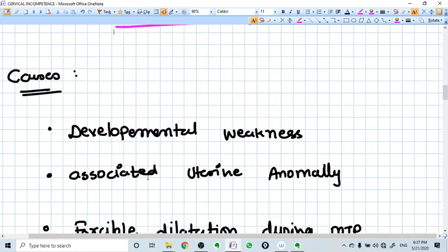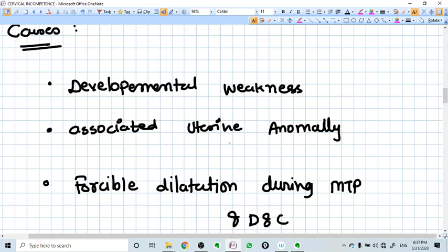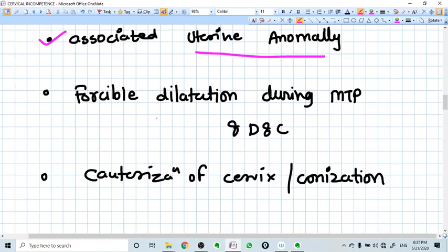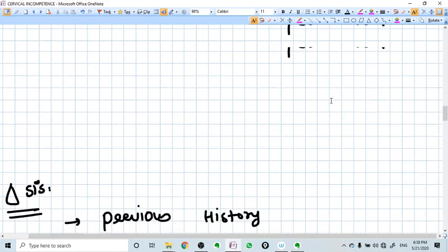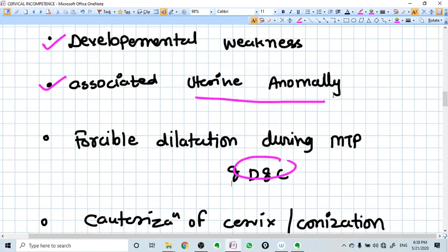There may be developmental weakness of the cervix, or the structure of collagen may not be well formed. Some associated uterine anomalies can be there. Forcible dilatation during D&C, MTP, cauterization, or conization of the cervix leading to structural damage - all these things will lead to cervical incompetence.